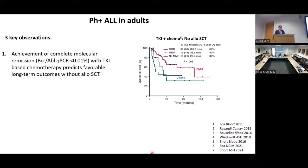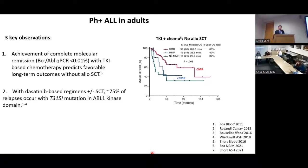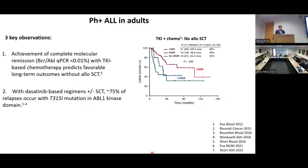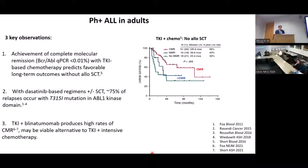There have been three key observations recently that have really changed the way we think about managing this disease. First, in a large retrospective study, it was shown that achievement of a complete molecular remission with TKI-based chemotherapy predicted favorable long-term outcomes even without stem cell transplant. Second, across a number of studies with dasatinib-based regimens — which had become the standard of care — roughly 75% of relapses occurred uniformly with the T315I ABL kinase domain mutation. And third, more recently, it has been shown that the combination of a TKI with blinatumomab produces very high rates of complete molecular remission and may be a viable alternative to the combination of TKI plus intensive chemotherapy.